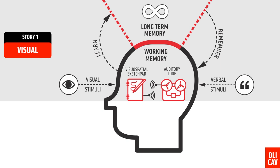Story number one is what dual coding is quite rightly known as. It's quite useful, and if it was only that I could stop now because there's nothing more to say about it — it's about learning simple stuff. It's not about expanding and challenging children's conceptual understanding. Paivio did write something else which is the basis of story number two, which is far more significant, far more complex, and far more useful for teachers in classrooms. Let me explain story number two by starting with Paivio himself.